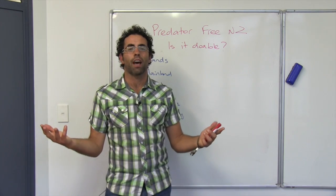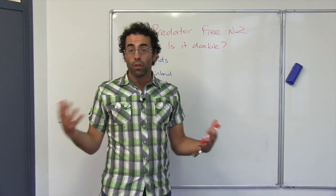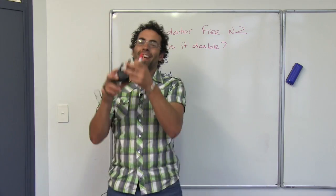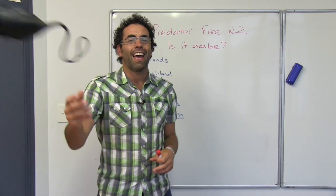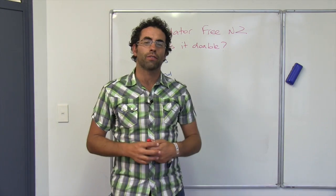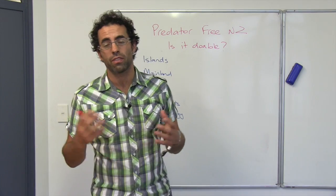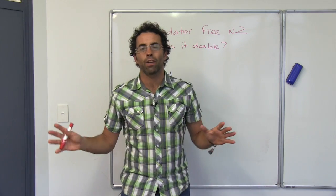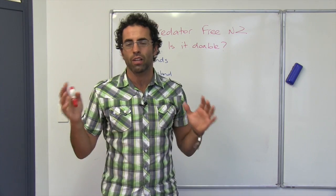First, what predators are we talking about? We're talking about possums, rats, our good friend the rats, mustelids - so things like stoats and weasels and ferrets. We're talking about getting rid of those guys from our country altogether.